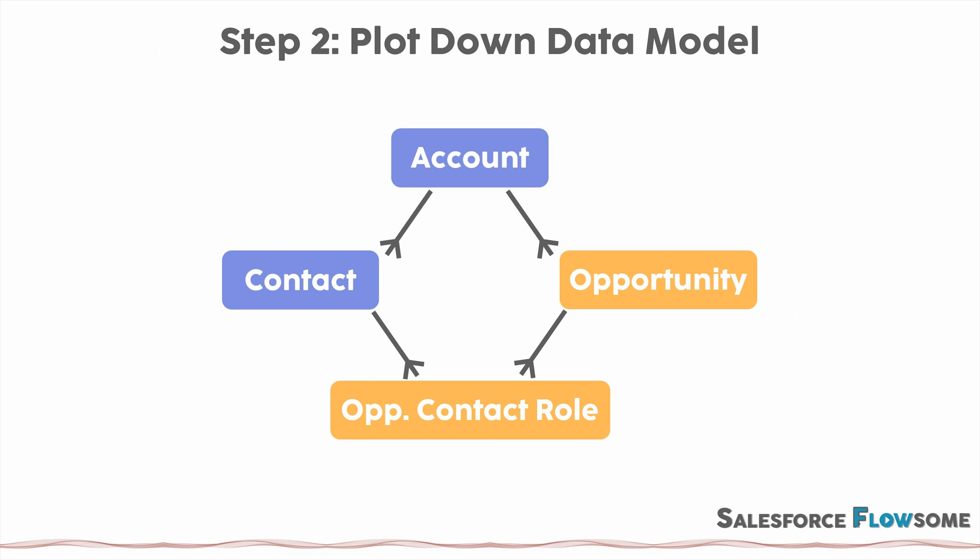Then it comes to step two: plot down the data model. The objects involved will be account, contact, opportunity, and the junction object — opportunity contact role. Because account is the parent for both opportunity and contact, I put it at the highest level and draw two relationships to contact and opportunity. Since opportunity contact role is the junction object, I put it at the lowest level with two relationship lines from contact and opportunity. So this is the data model involved in our current flow solution.